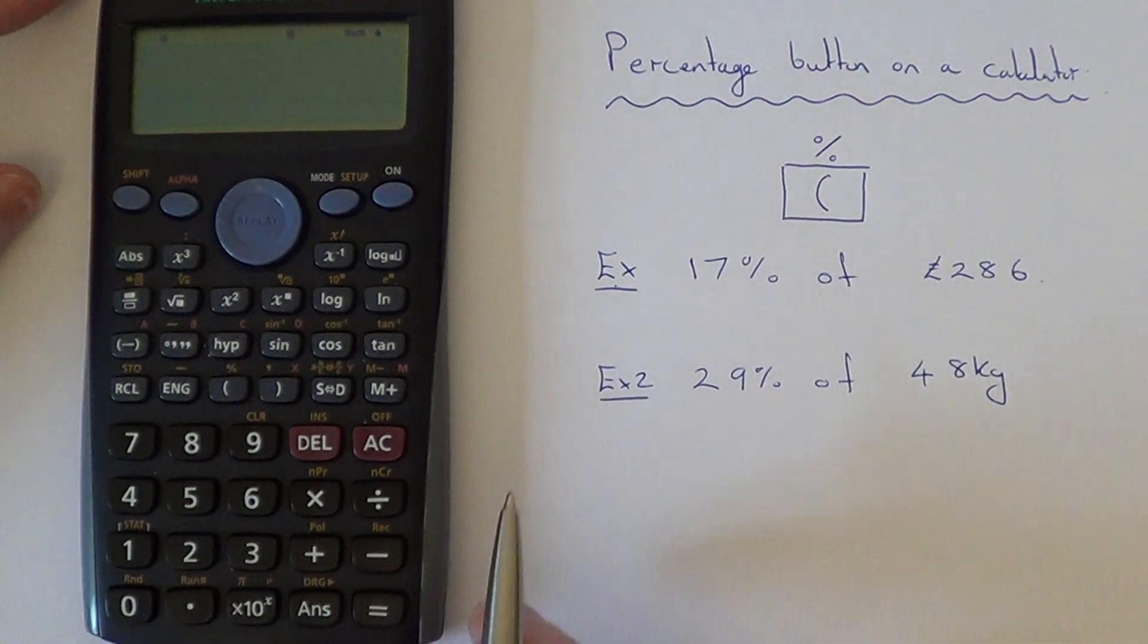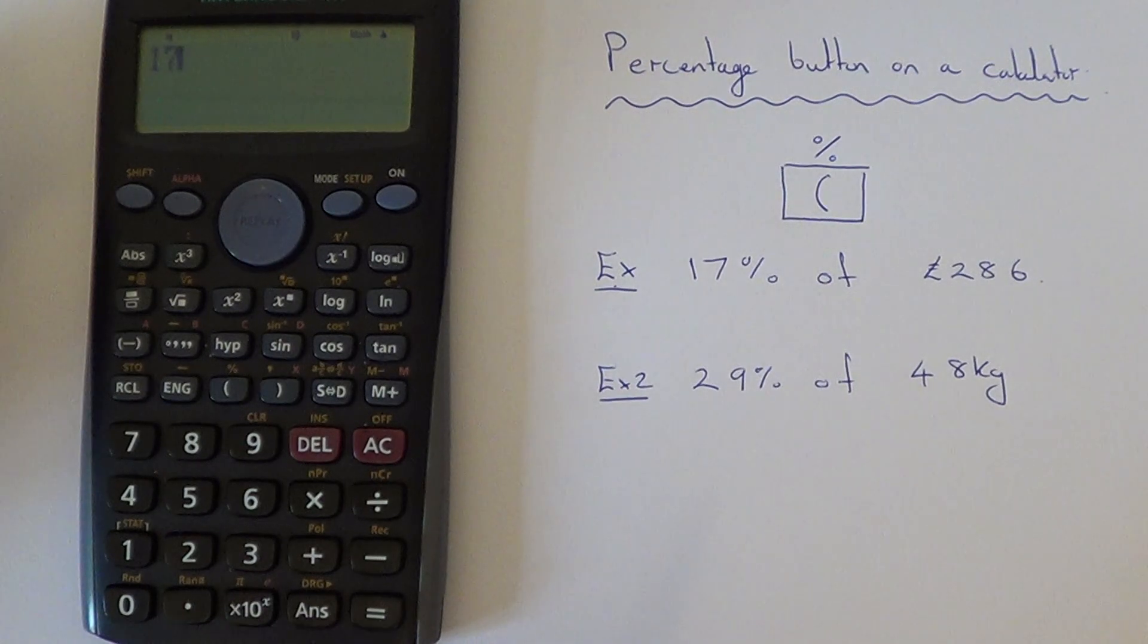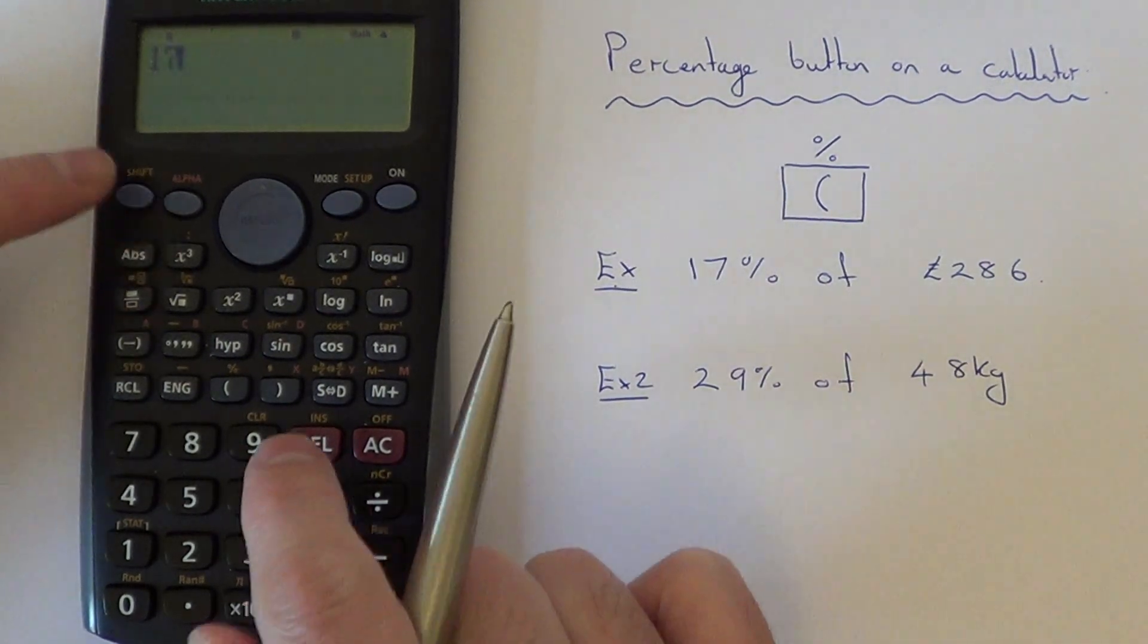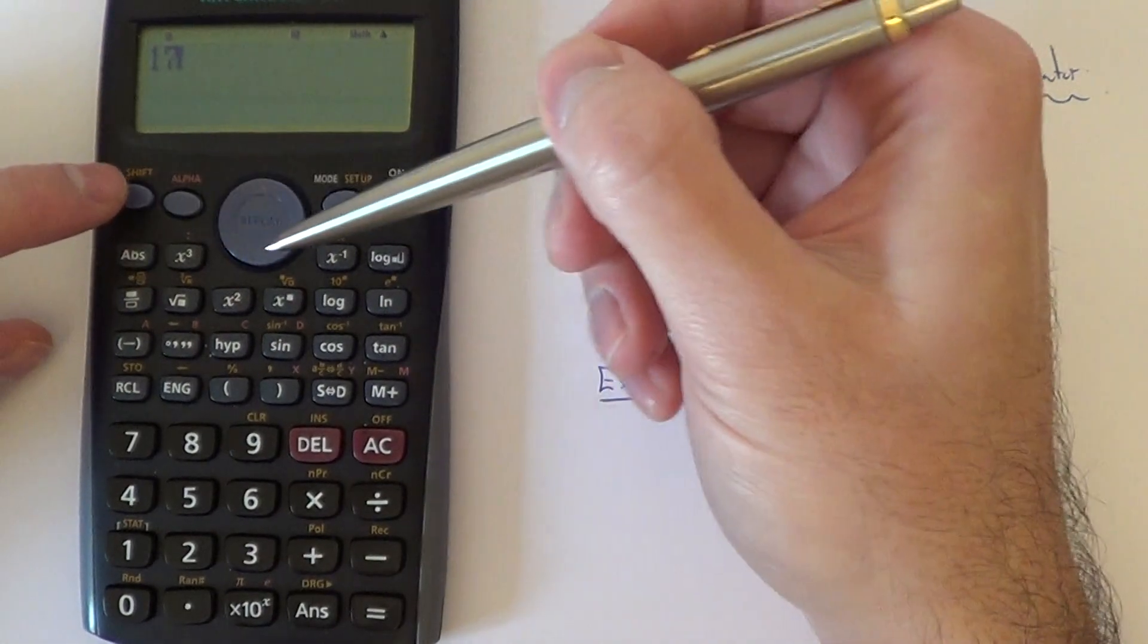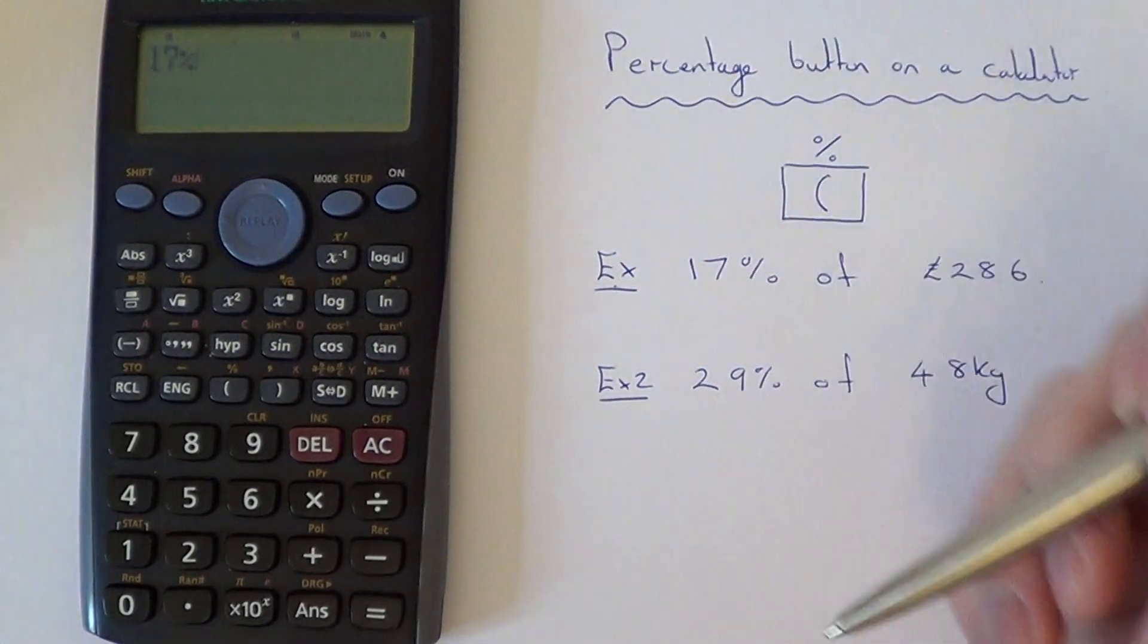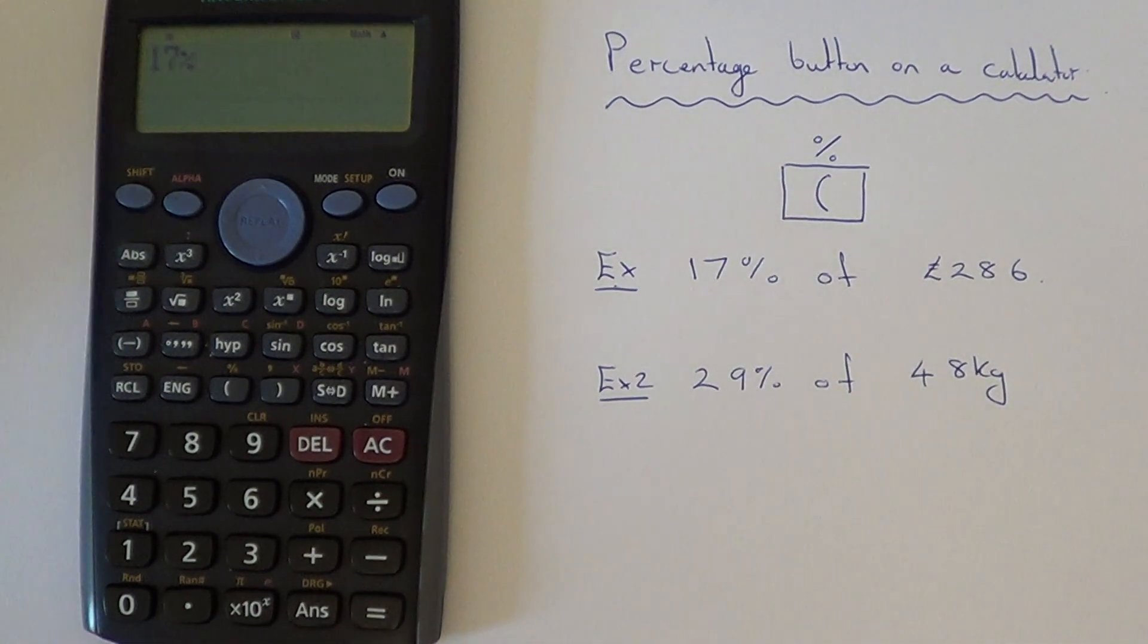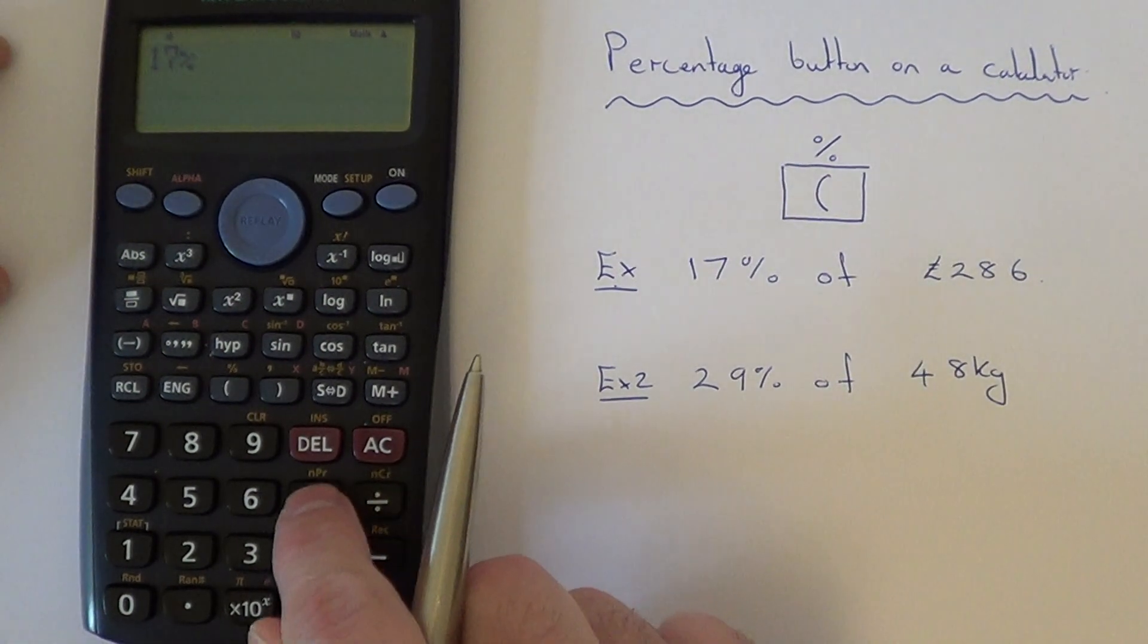We'll type this in as 17, and then we press the percent button by going shift left bracket. Now we haven't got an 'of' key on the calculator, but instead of 'of' you use the times key.